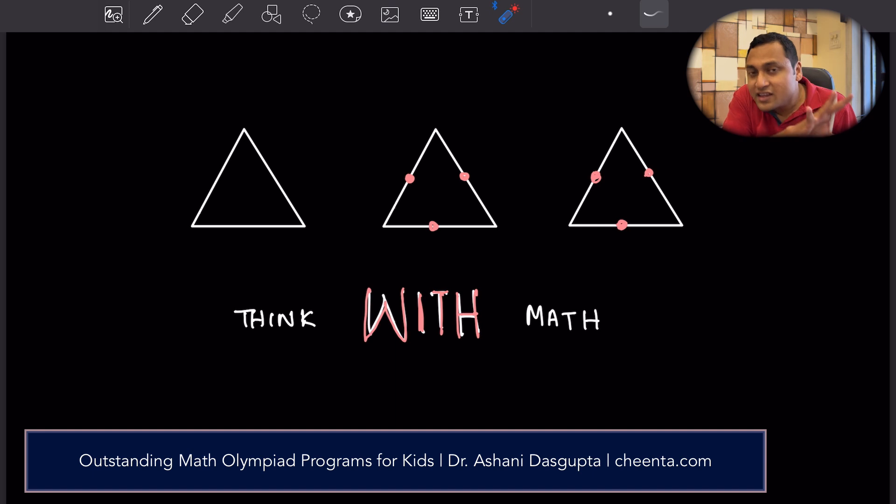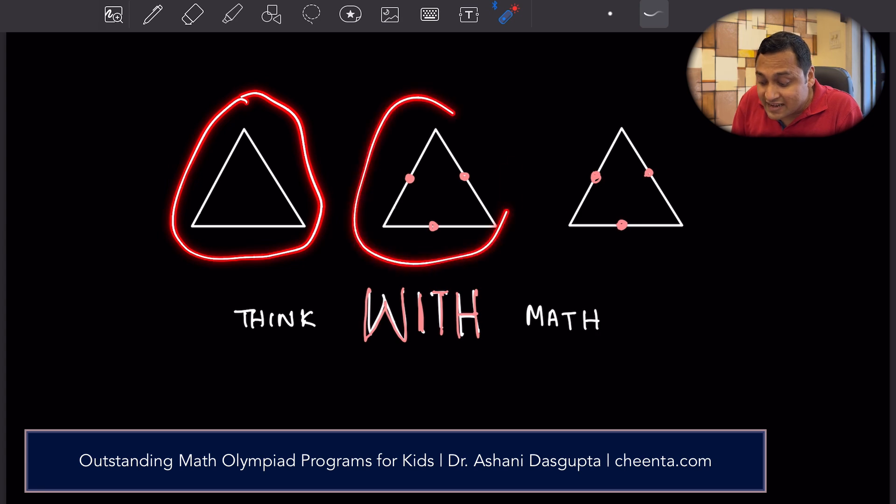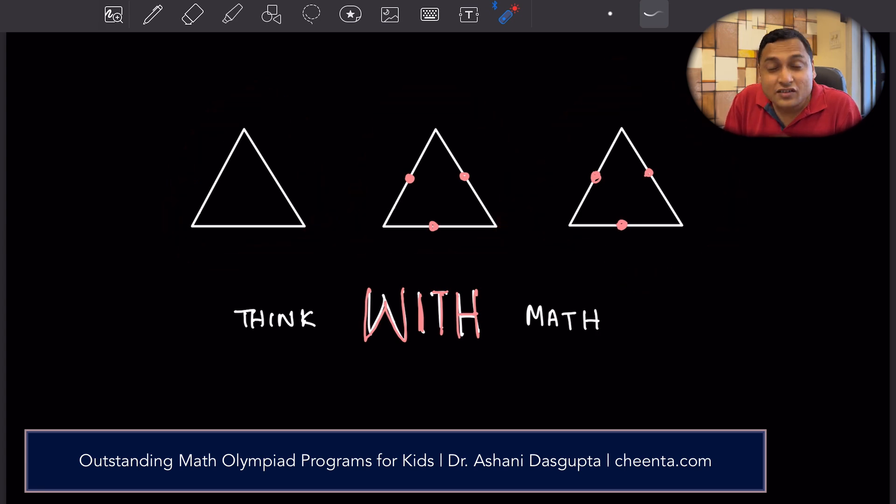Today, we will learn to think with math using a very simple mental exercise. It's called the repeated triangle problem. Let's see what it says. Suppose you have a triangle. If you just look at the triangle, how many closed regions do you see?